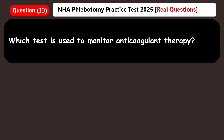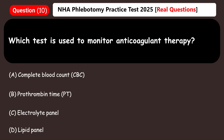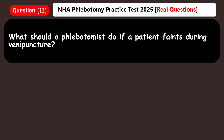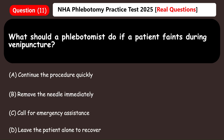Which test is used to monitor anticoagulant therapy? A) Complete blood count (CBC), B) Prothrombin time (PT), C) Electrolyte panel, D) Lipid panel. Answer: B) Prothrombin time (PT).